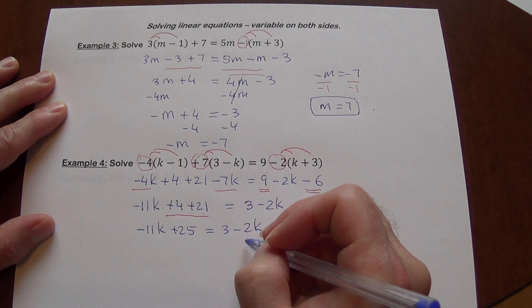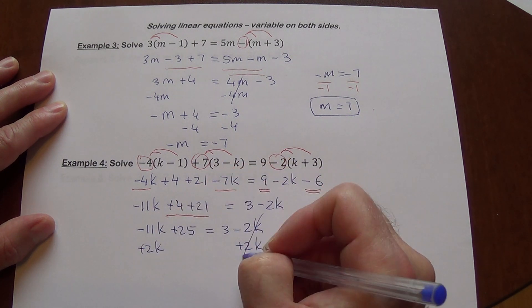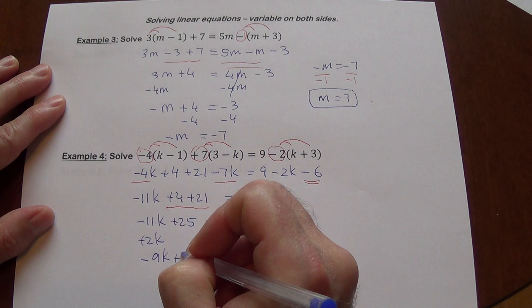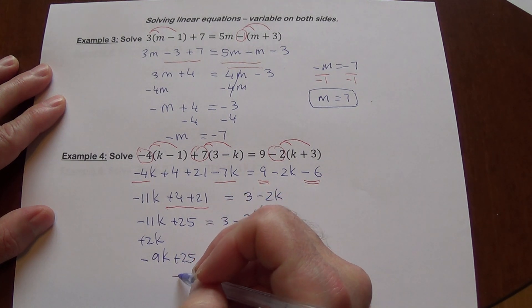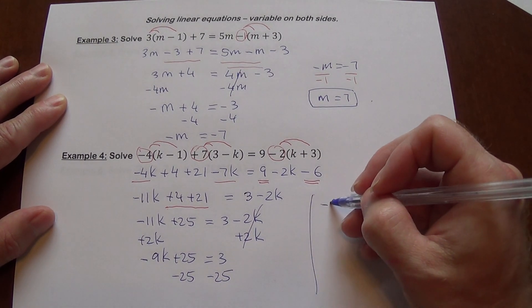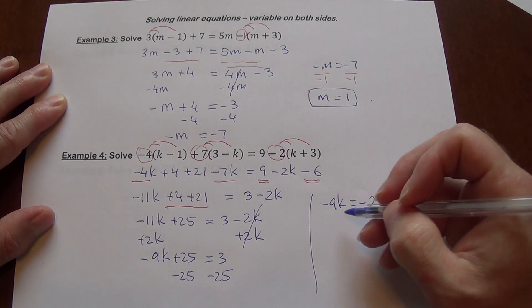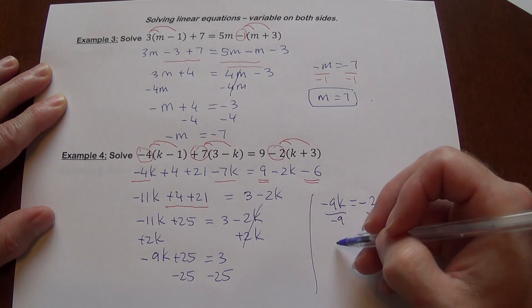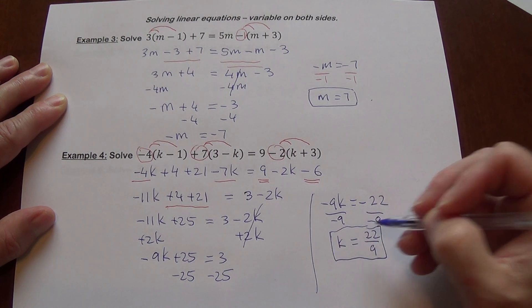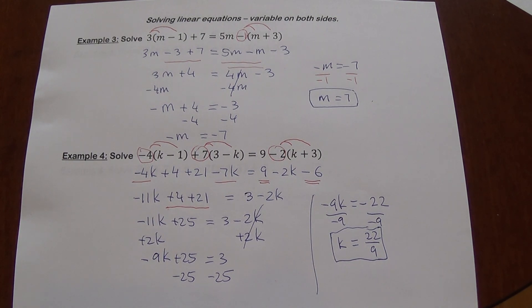I need to combine my like terms. So if I add 2k on both sides, this will allow me to cancel that. So I'm going to end up with negative 9k plus 25 equals 3, subtract 25, and continue on this side here. So we have negative 9k equals 3 minus 25 is negative 22. Divide both sides by negative 9. They do not divide, so we are going to leave it as a fraction. Or if you have to, you can plug it in the calculator and actually get a decimal, but then you need to know what approximation you need.